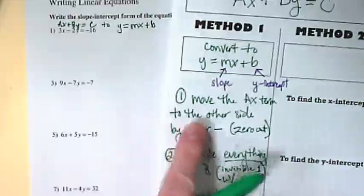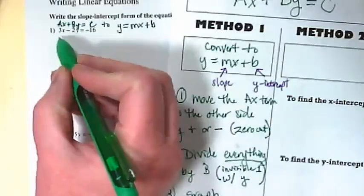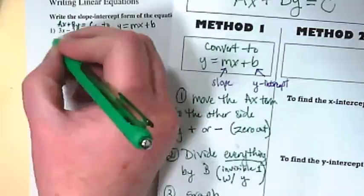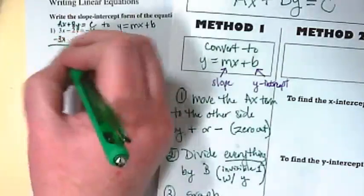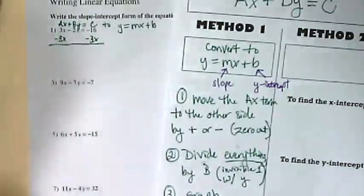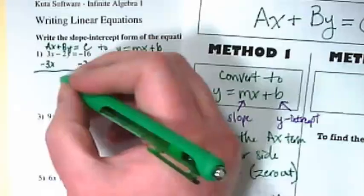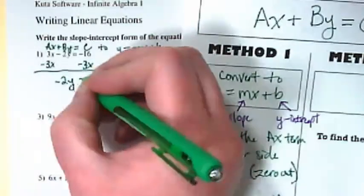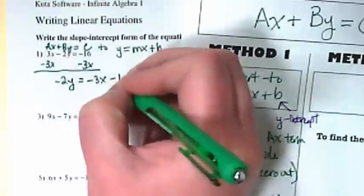The first step is to move the ax term to the other side. Our ax term is 3x. We want to zero it out and get it to the other side of our equation. So I end up with negative 2y is equal to negative 3x minus 16.